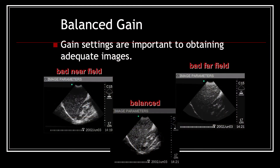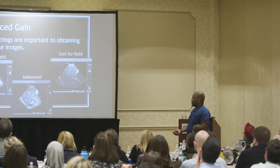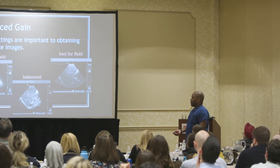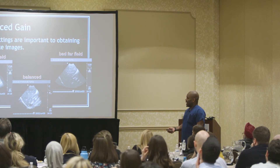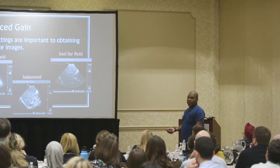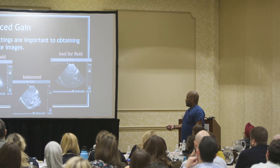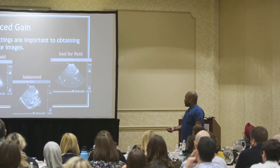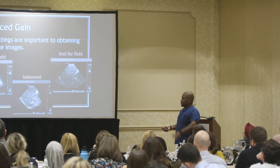You can have an overall gain where the whole image changes, or near gain where you're adjusting what's closer to the transducer, or far gain for what's lower down. If you have problems with your near field and can't see what's going on there, change your near gain. If you can see everything up top but can't see the kidney well down below, change your far gain. And if the whole image is bad, change the total gain.